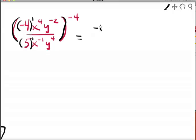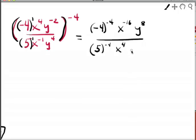I'm going to get on the top a negative four to the one times negative four, which is negative four power. I'm going to have x to the negative 16 and I'm going to have y to the positive eight on the bottom. I'm going to have five to the negative fourth power and I'm going to have x to the positive four and y to the negative 16.